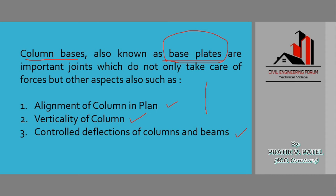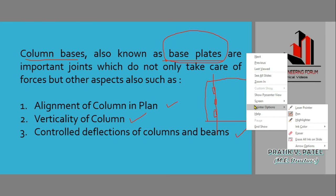Suppose I have drawn a structural plan showing all the columns — one is over here, second is over here, third is over here. The alignment of all three columns should be in a single line according to the plan, and this alignment is controlled by using column bases. Secondly, verticality of the column — if we look at the column from the sideways.